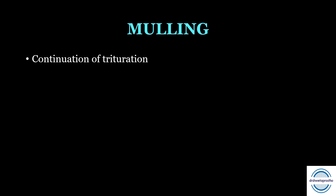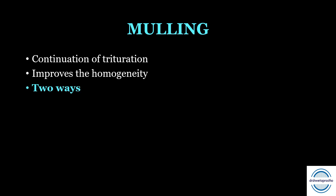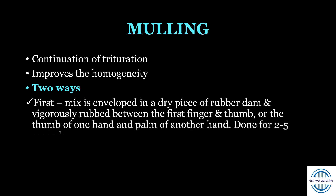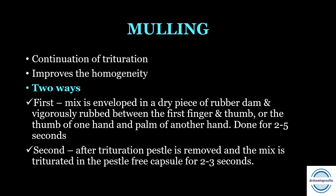Next is mulling, which is the continuation of trituration. It improves the homogeneity of the mass and gives a single consistent mix. It can be done by enveloping the mix in a dry piece of rubber dam and rubbing between the first finger and thumb — or using the thumb of one hand and the palm of another — for two to five seconds. Alternatively, after trituration the pestle is removed and the mix is triturated in the pestle-free capsule for two to three seconds.